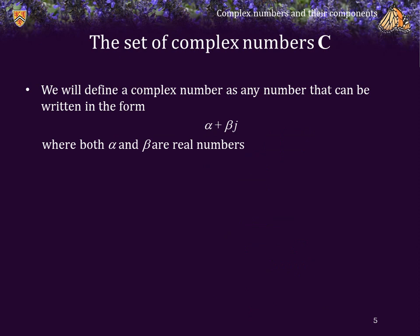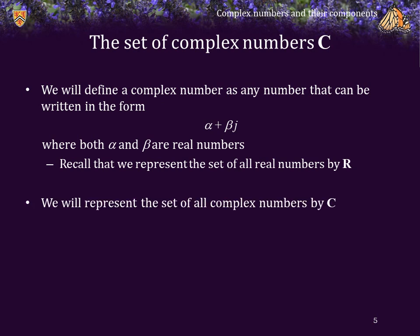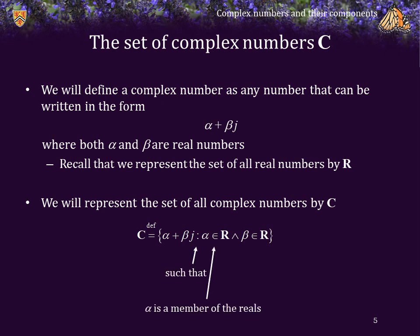We will define a complex number as any number that can be written in the form alpha plus beta j, where both alpha and beta are real numbers. Recall that we represented the set of all real numbers by a bold-faced R. We will represent the set of all complex numbers by a bold-faced capital C, defined as all alpha plus beta j such that alpha is a real number and beta is also a real number.